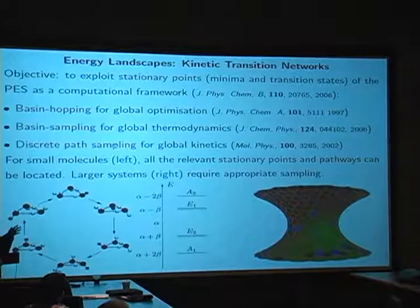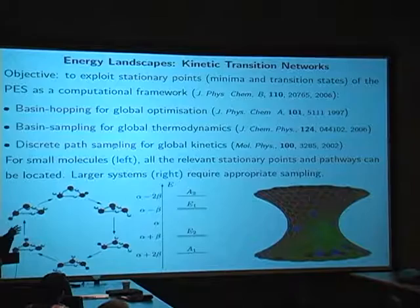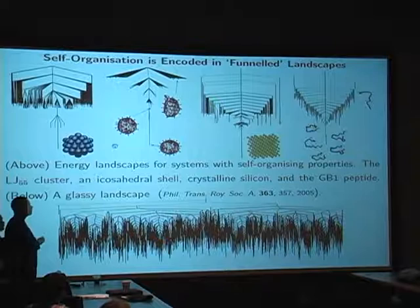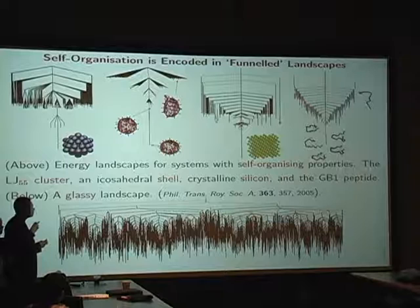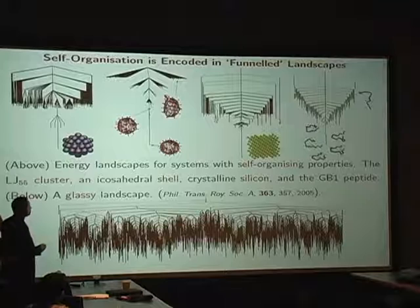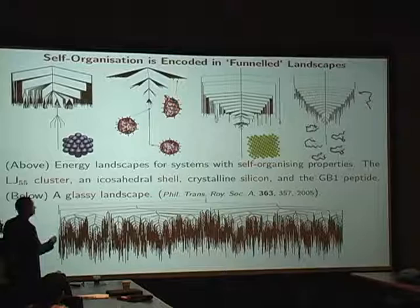So that's all predicated on having efficient geometry optimization, basically. We're converting our problem into finding those pathways and then using statistical mechanics and unimolecular rate theory to put back in the statistical weightings appropriately for all the thermodynamics and kinetics. So before I forget, this could be my most important message, that self-organization is somehow encoded in funneled landscapes.